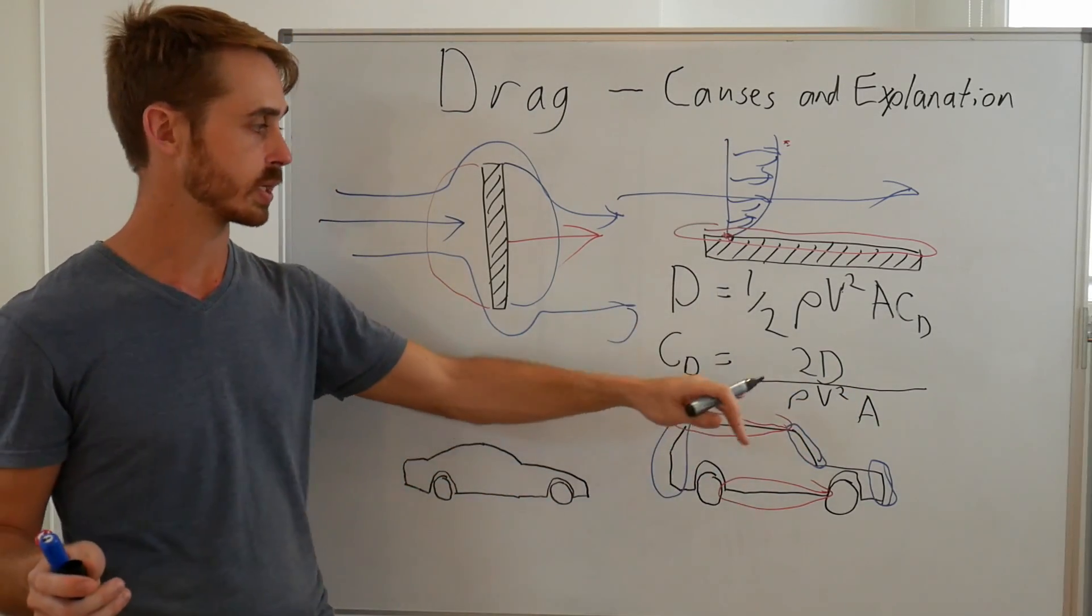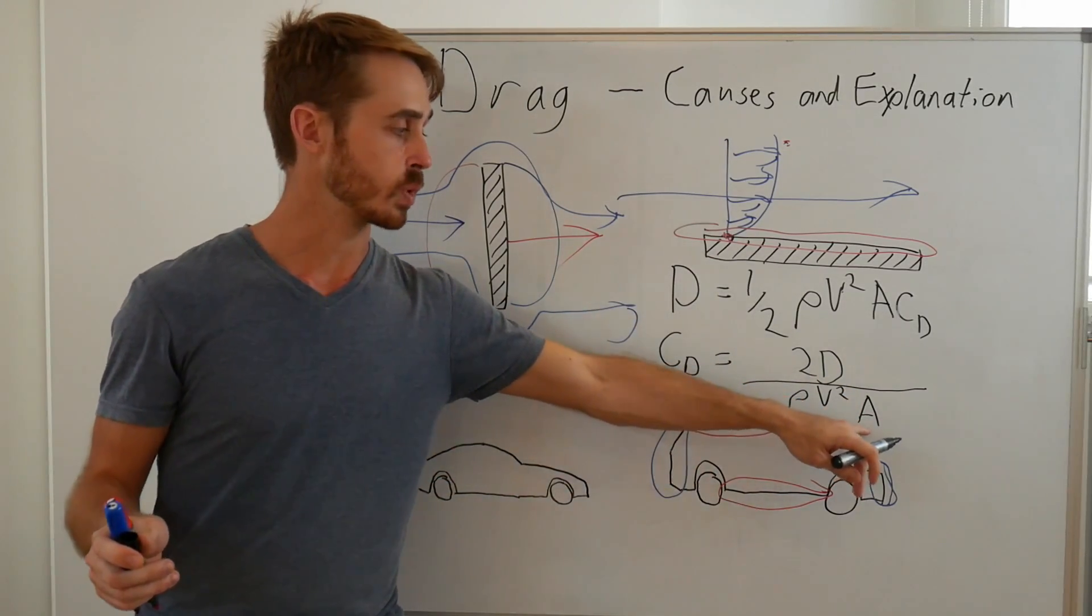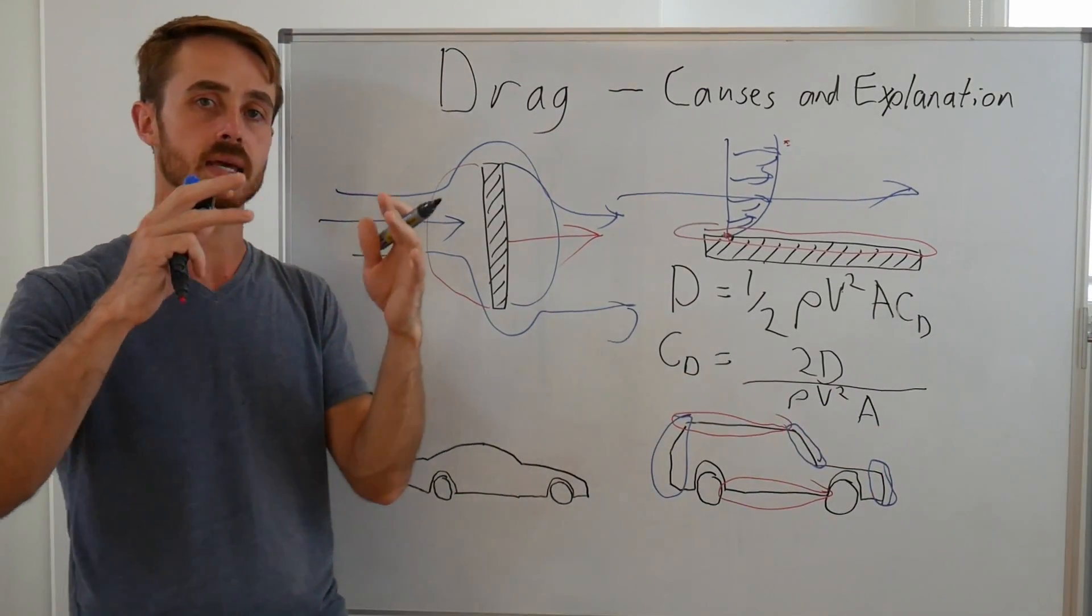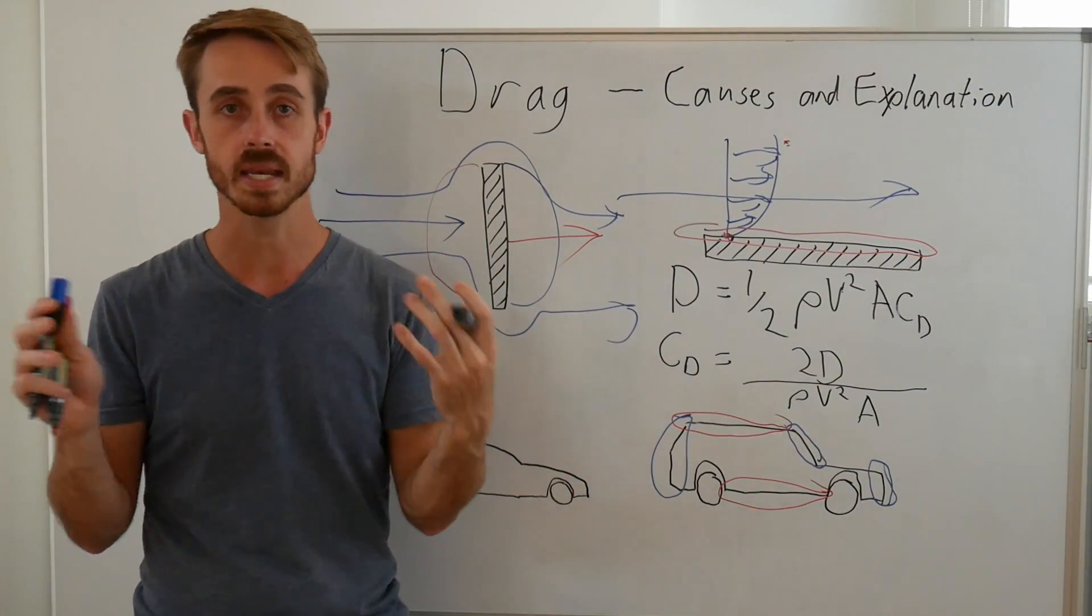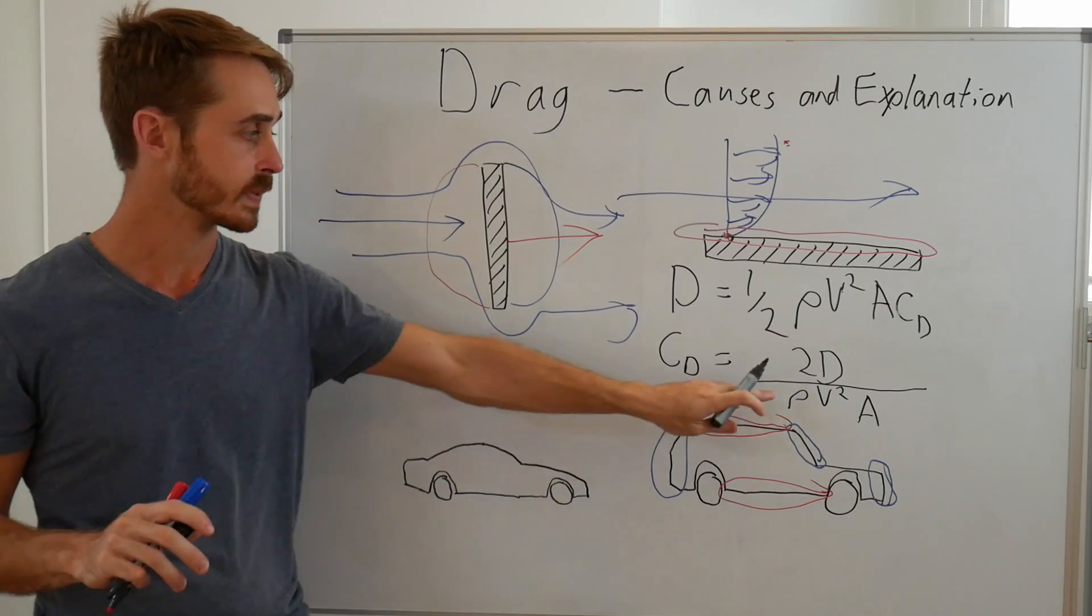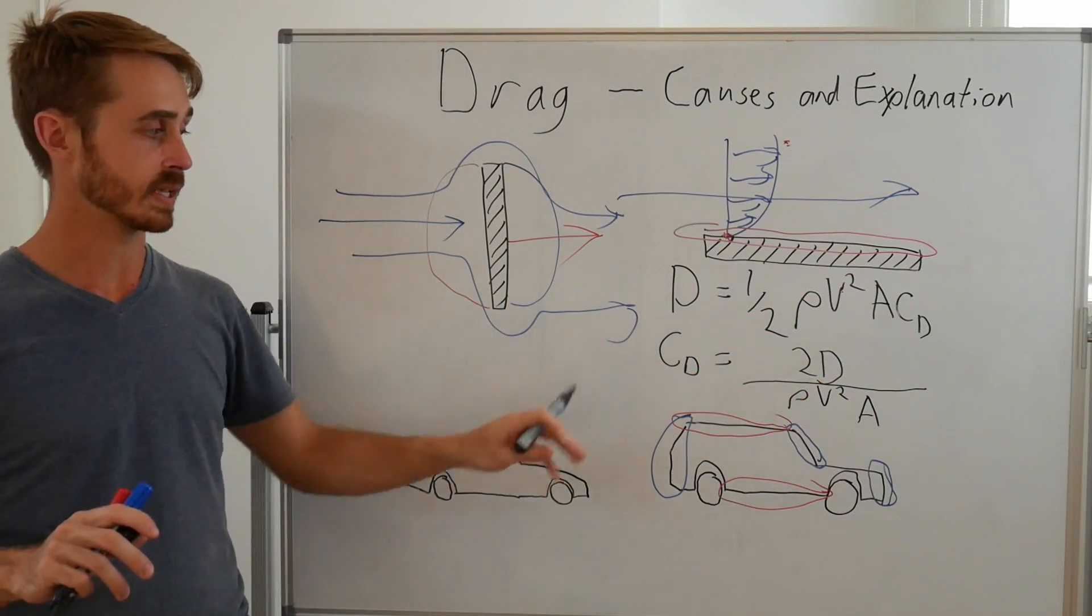We get an air density of 1.2 kilograms per meters cubed, and then we put in our area which we decide as the frontal area or any reference area you want on the front of the car. And then we calculate all that and that gives us our CD.